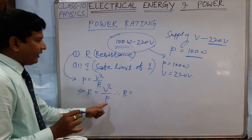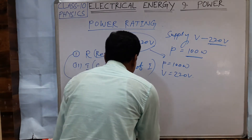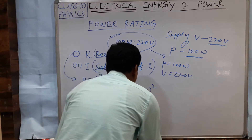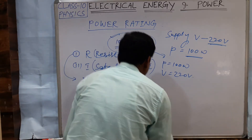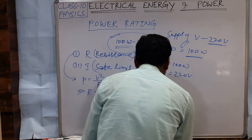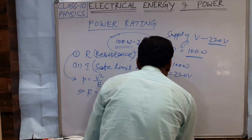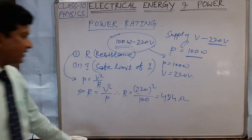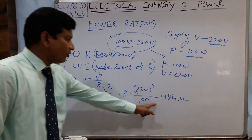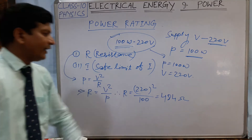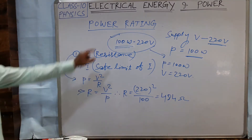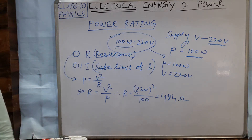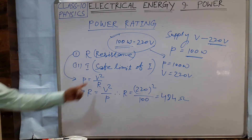For our example, R = 220² / 100. When you simplify it, you get 484 ohm. That means the resistance of the filament of the bulb will be 484 ohm whenever a bulb is marked as 100 watt and 220 volt.